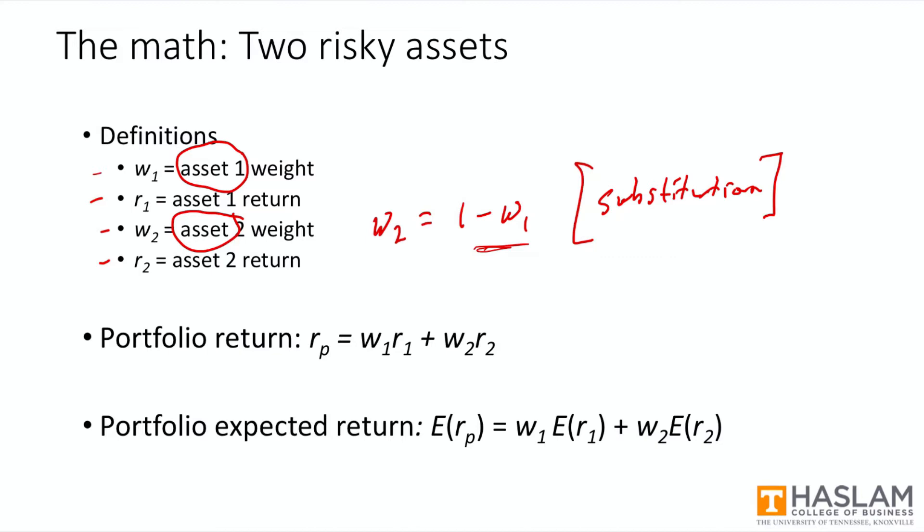Now the portfolio return is a very simple calculation. It's just a weighted average of the component return. The return on the portfolio is the weight of asset one times the return on one, plus the weight of asset two times the return of asset two. And the same concept, the weighted average concept, is true for expected return as well.